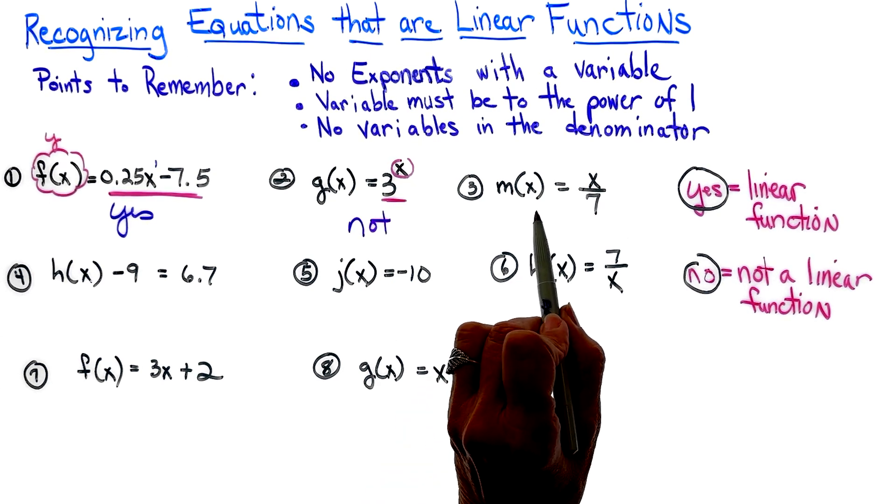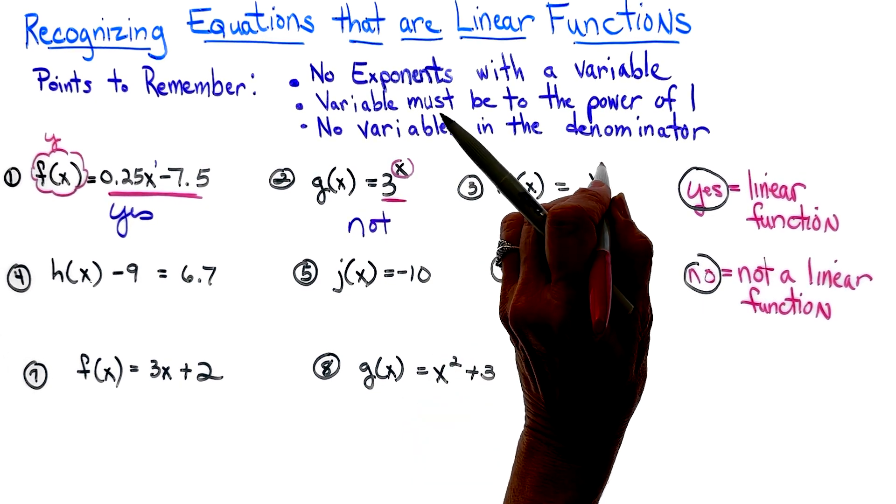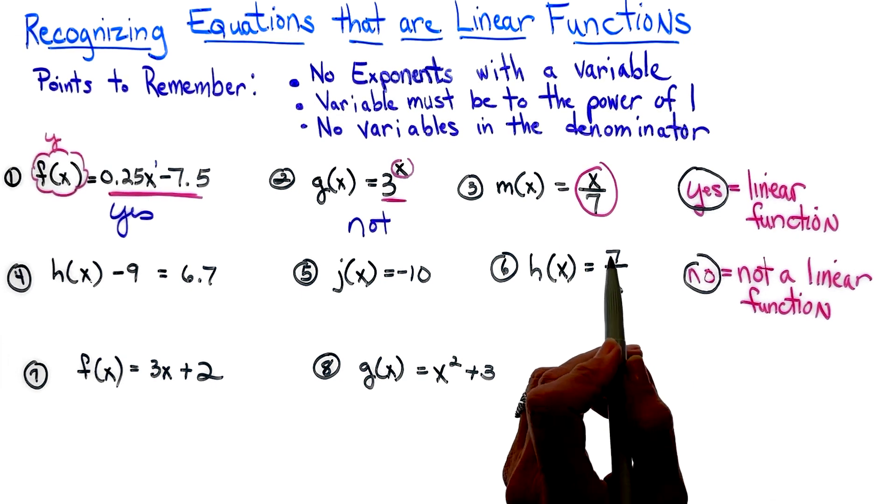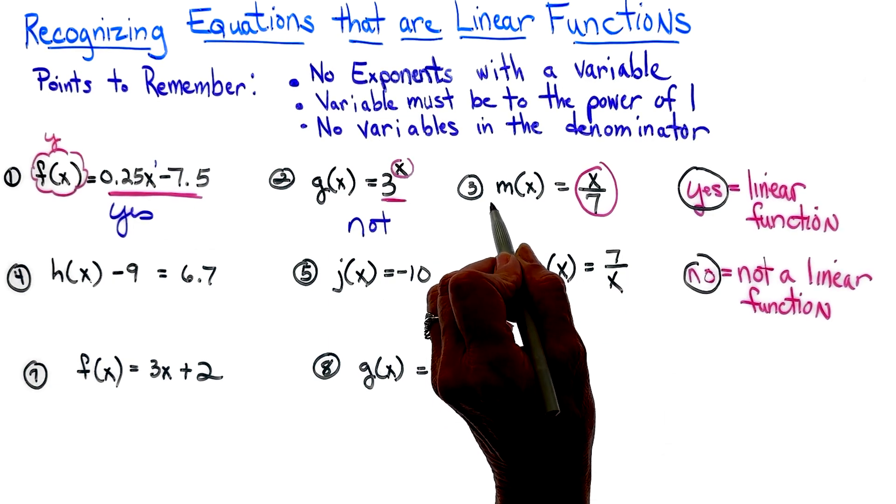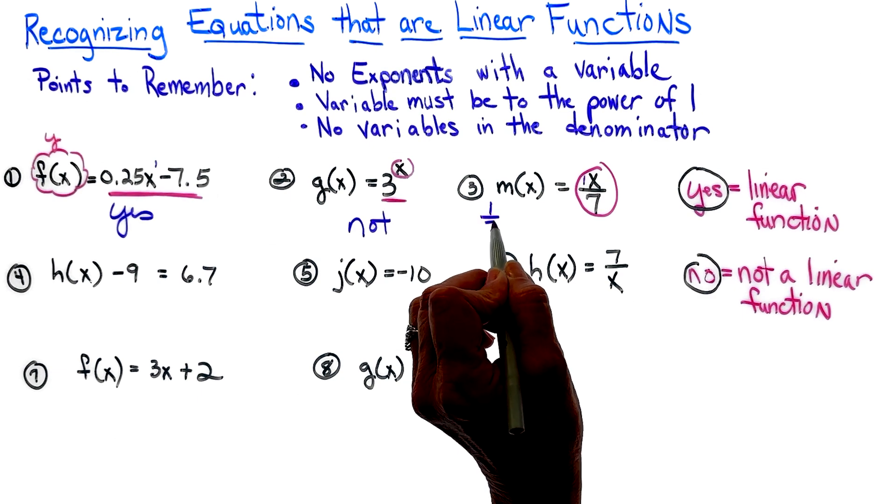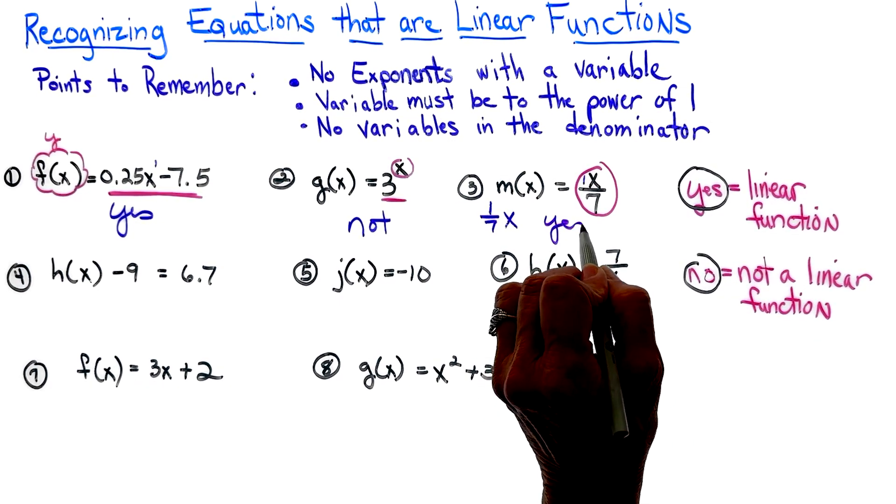For the next one, again we're just looking at this. When I'm looking at that, don't let the x in the numerator scare you, because I can actually rewrite this problem where a one is understood in front of this x, so it's one-seventh x. So knowing that, we do know that absolutely this is a linear function.